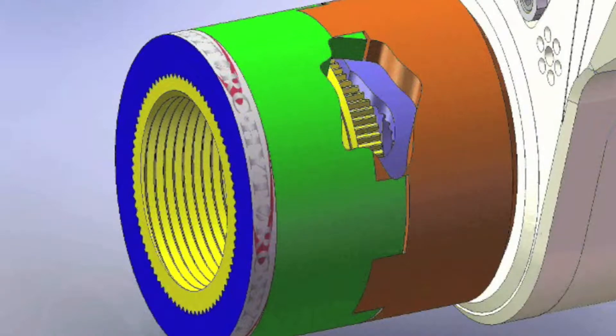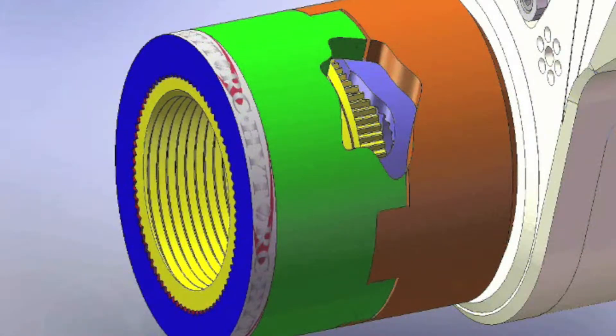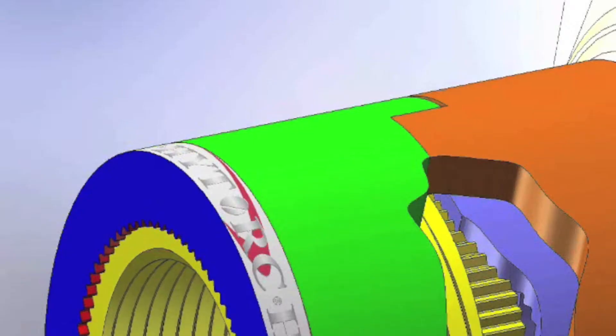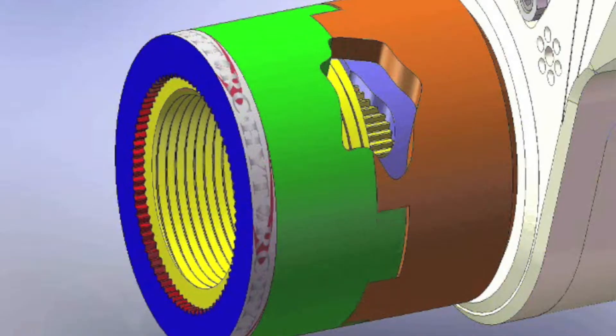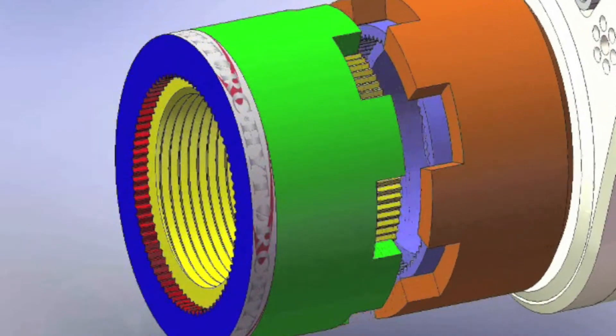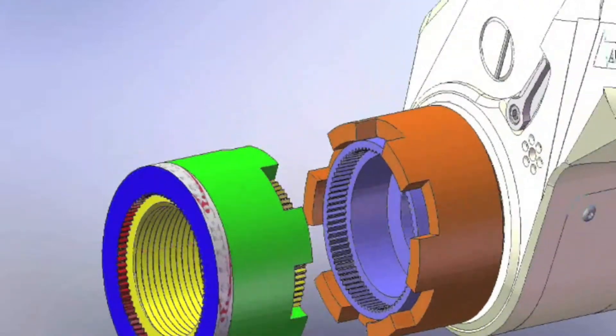The three components of the HITORQ nut are tested under very strict tolerances to guarantee this. When the outer sleeve of the nut is turned, the inner sleeve raises straight up to tension the bolt, making it very straightforward.